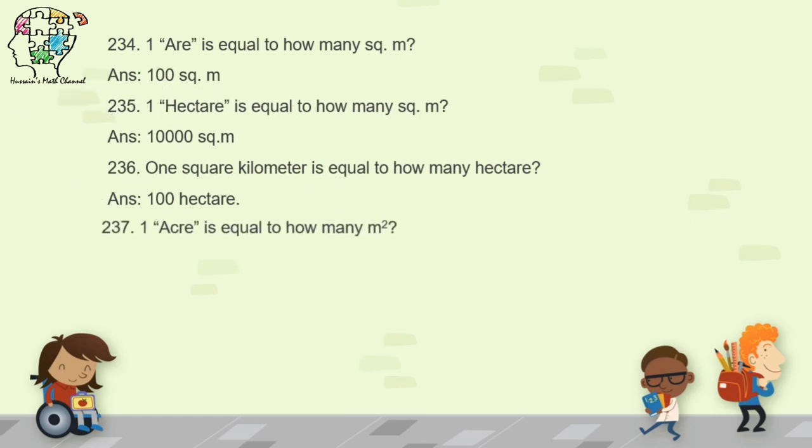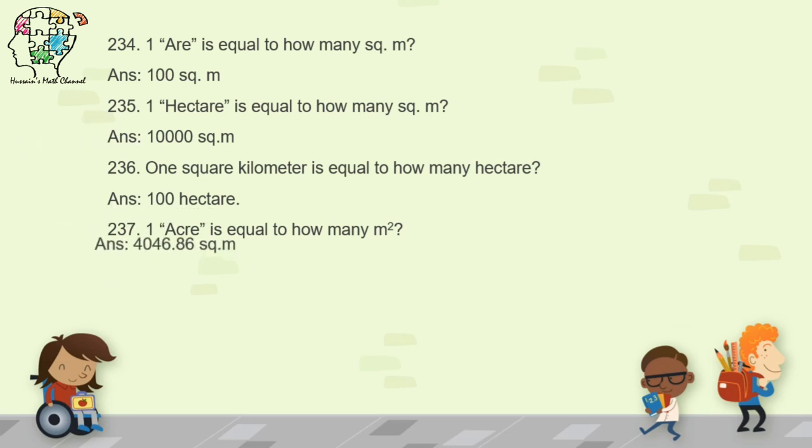Question 237: one acre is equal to how many square meters? One acre equals 4,046.86 square meters.